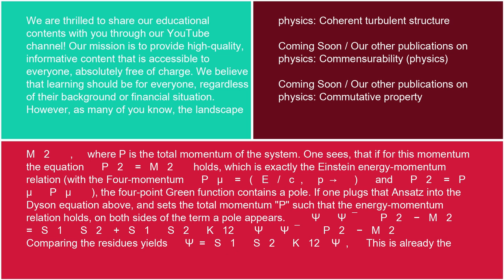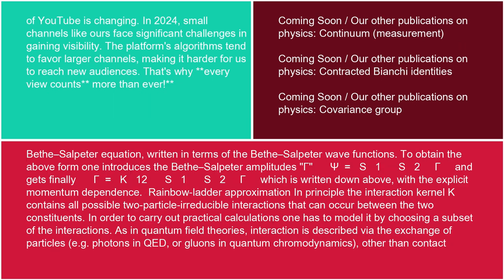One sees that if for this momentum the equation P² equals M² holds — which is exactly the Einstein energy-momentum relation with the four-momentum Pμ equals (E/c, P) and P² equals PμPμ — the four-point Green's function contains a pole. If one plugs that ansatz into the Dyson equation above and sets the total momentum P such that the energy-momentum relation holds, on both sides of the term a pole appears: ψψ̄ / (P² − M²) equals S₁S₂ plus S₁S₂K₁₂ · ψψ̄ / (P² − M²). Comparing residues yields ψ equals S₁S₂K₁₂ψ. This is already the Bethe-Salpeter equation written in terms of the Bethe-Salpeter wave functions. To obtain the above form, one introduces the Bethe-Salpeter amplitudes Γ, where ψ equals S₁S₂Γ, and gets finally Γ equals K₁₂S₁S₂Γ, with the explicit momentum dependence.